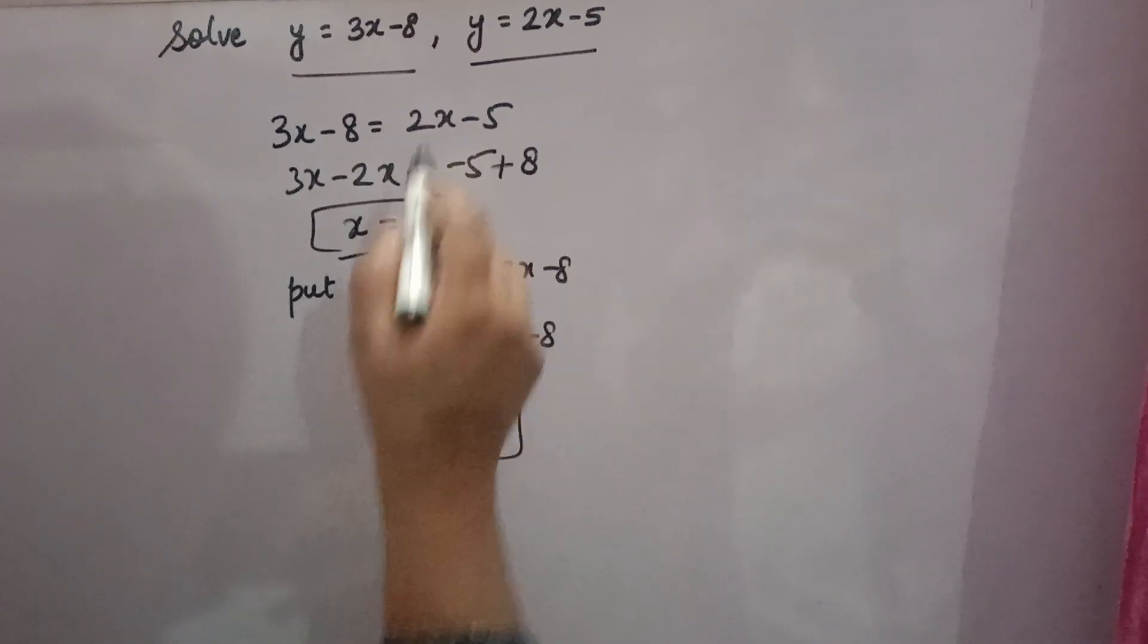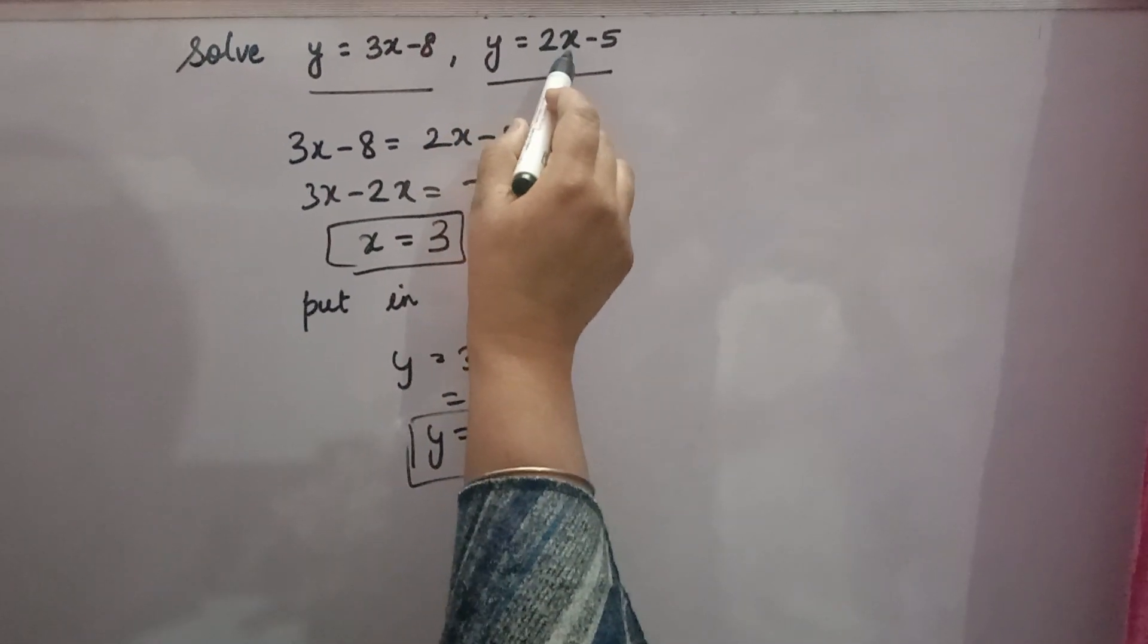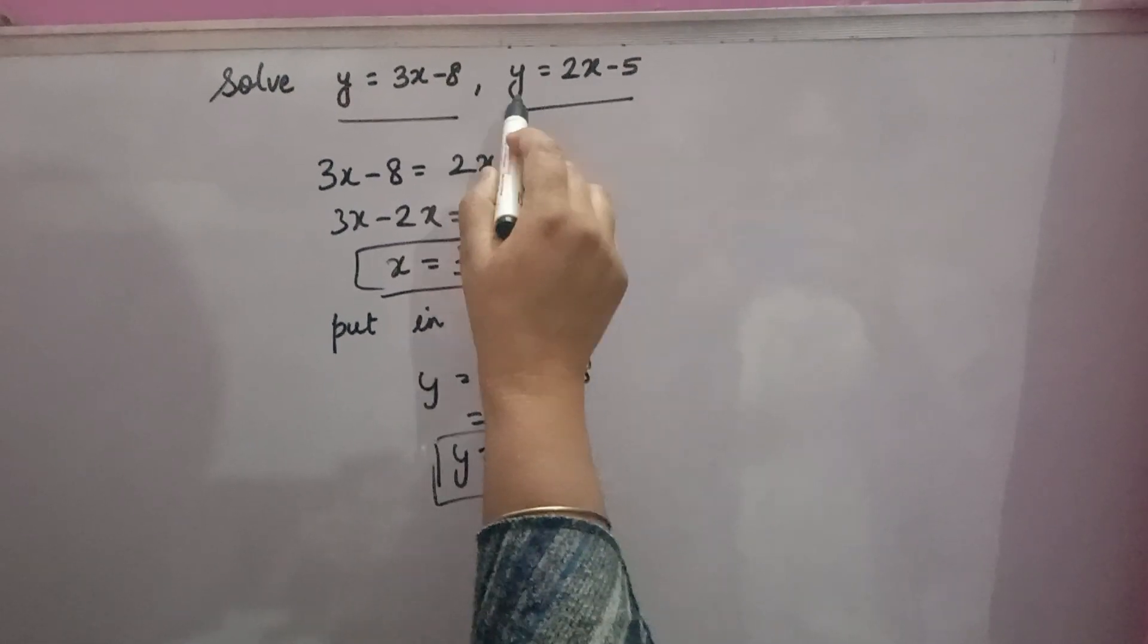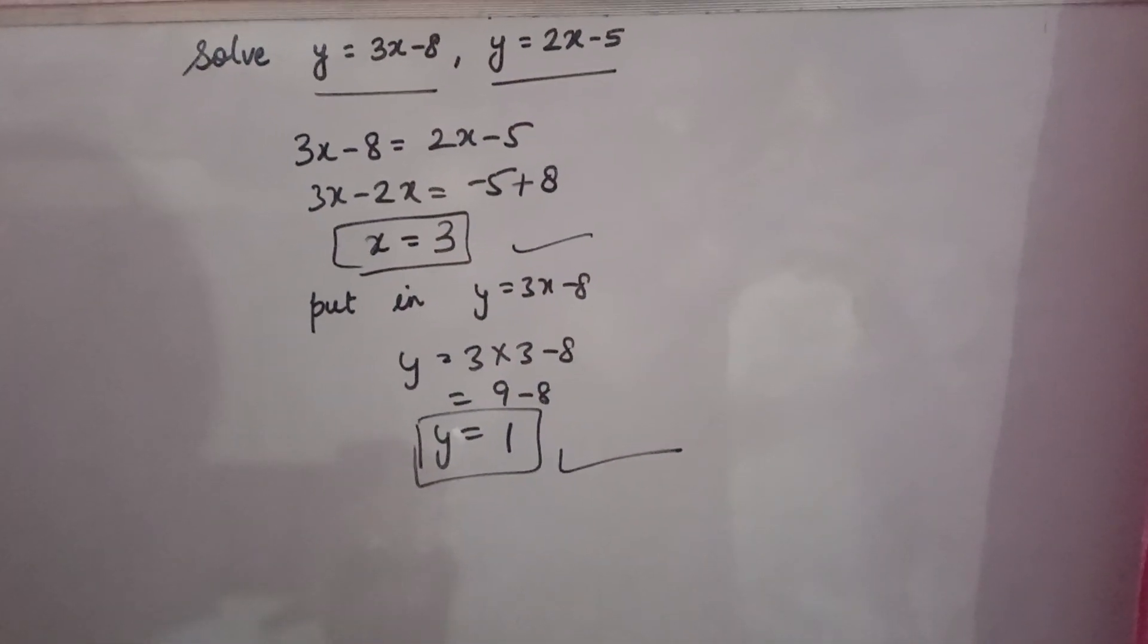You can see if it is correct or not. If you will put here x value 3, 2 into 3 is 6, 6 minus 5 is 1. That means your answer is correct. Thank you.